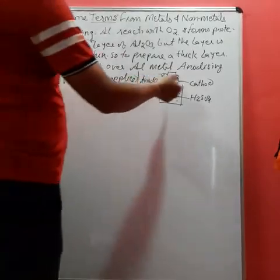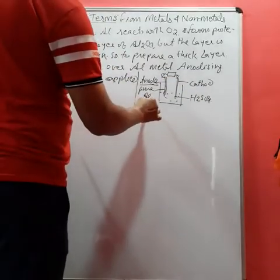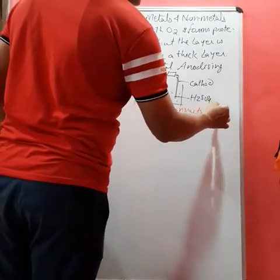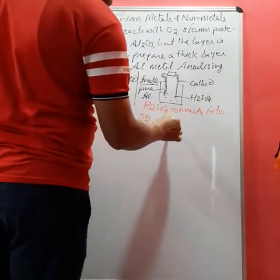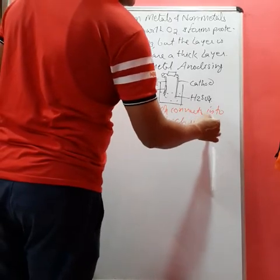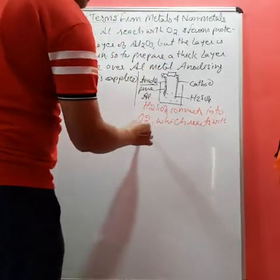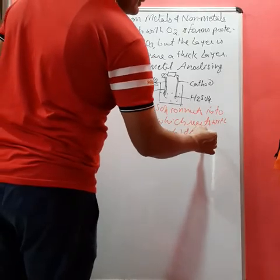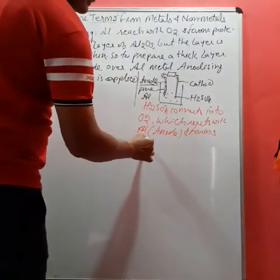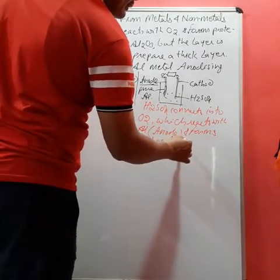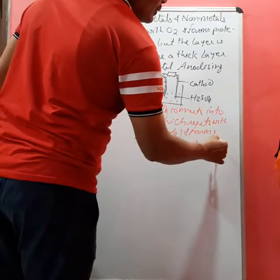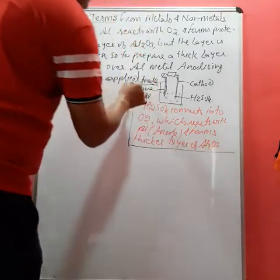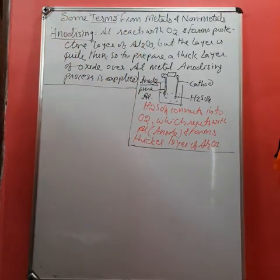When electric current is supplied, the H2SO4 converts into O2 which reacts with the aluminum anode and forms a thicker layer of Al2O3, so that the aluminum metal can be better protected from further reaction.